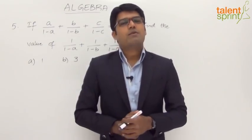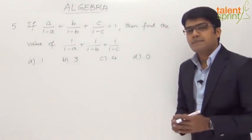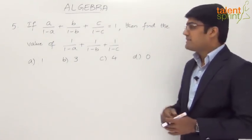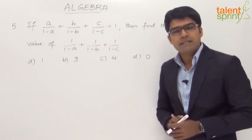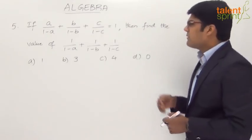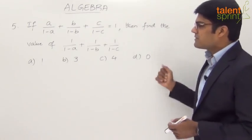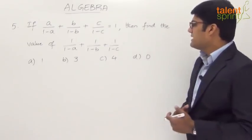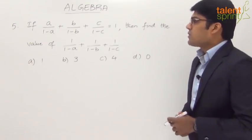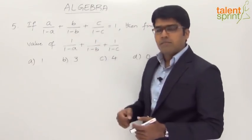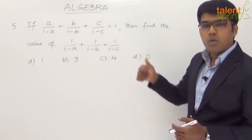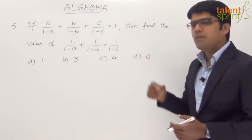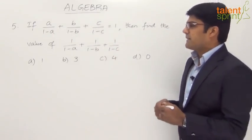Let us take question number 5 from the topic of algebra. It says: if a/(1−a) + b/(1−b) + c/(1−c) = 1, then find the value of 1/(1−a) + 1/(1−b) + 1/(1−c). The four answer options are: option A is 1, option B is 3, option C is 4, and option D is 0. We have to take the given equation and express it in the form of what is required.